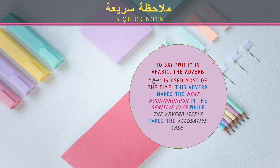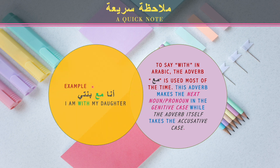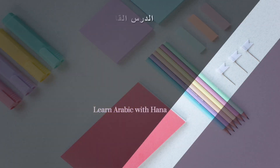At the end of this lesson, I want to note that in Arabic, when we want to say 'with', we usually don't use a coordination preposition — we use the adverb مع. Note that مع puts the following noun or pronoun in the genitive case, while مع itself takes the accusative case. Coordination prepositions, on the other hand, do not take any inflection case. Example: أنا مع بنتي — 'I am with my daughter.'